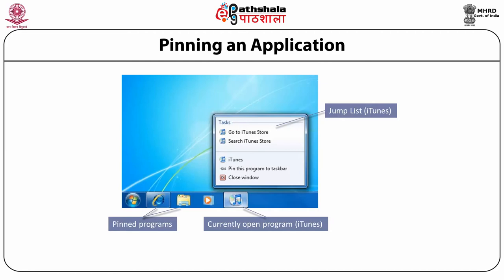A related concept is pinning items to the Start Menu. Items you select to pin appear at the top of the left pane of the Start Menu. For example, pin Microsoft Word to the Start Menu to save yourself from navigating through All Programs, scrolling to the Microsoft Office folder, and looking for Word. Pinning items to your taskbar or Start Menu customizes the Windows interface and increases productivity by helping you quickly find applications.